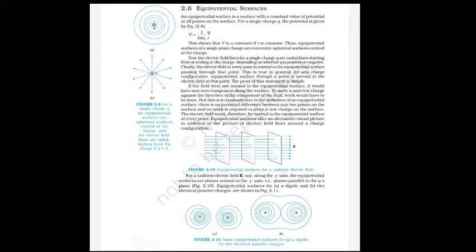In figures 2.11a and 2.11b, equipotential surfaces are shown for a dipole (negative charge on left, positive on right) and for two equal positive charges separated by some distance. These figures clearly illustrate the shape of equipotential surfaces for different charge configurations.